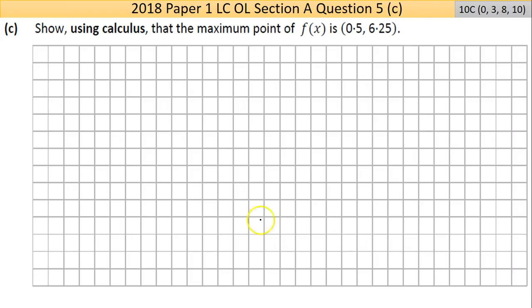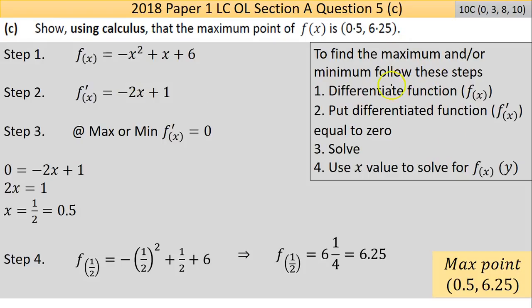So part C now says show using calculus, so it's another way of saying differentiating, that the maximum point of the function is 0.5 and 6.25. So you're given the answer. You're asked to prove the answer is correct. I've put in this little box here the steps to finding max or min. And the first step you differentiate whatever function you're given, then you put that differentiated function equal to zero because at the max or min, the slope of the function is equal to zero. So if you think about the quadratic like that at the max, the slope there is zero.